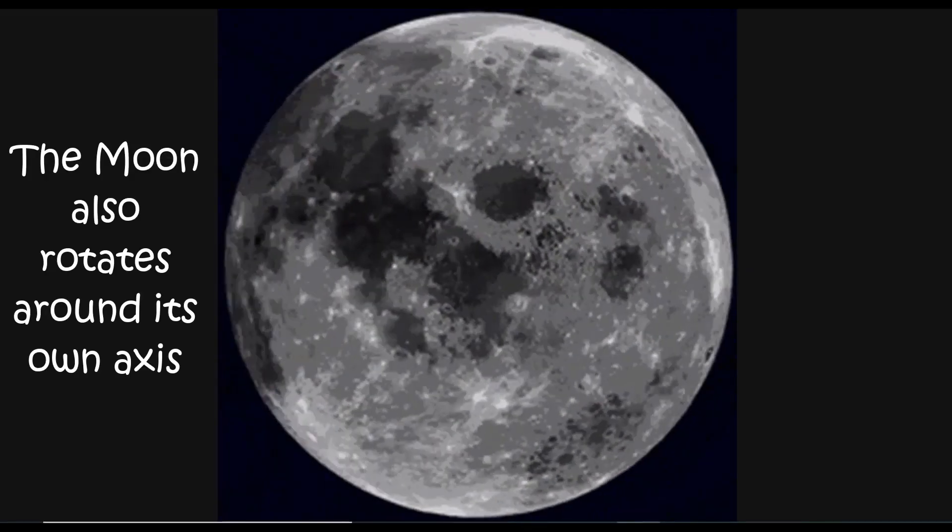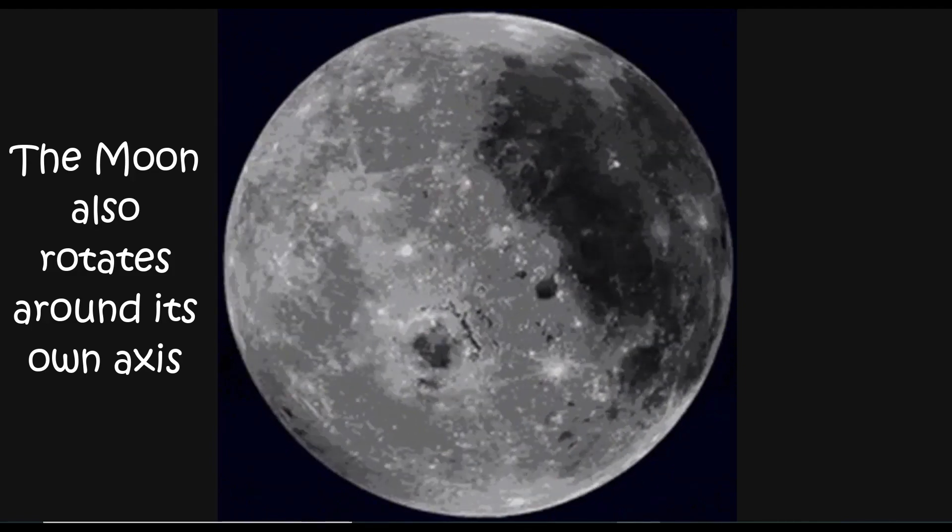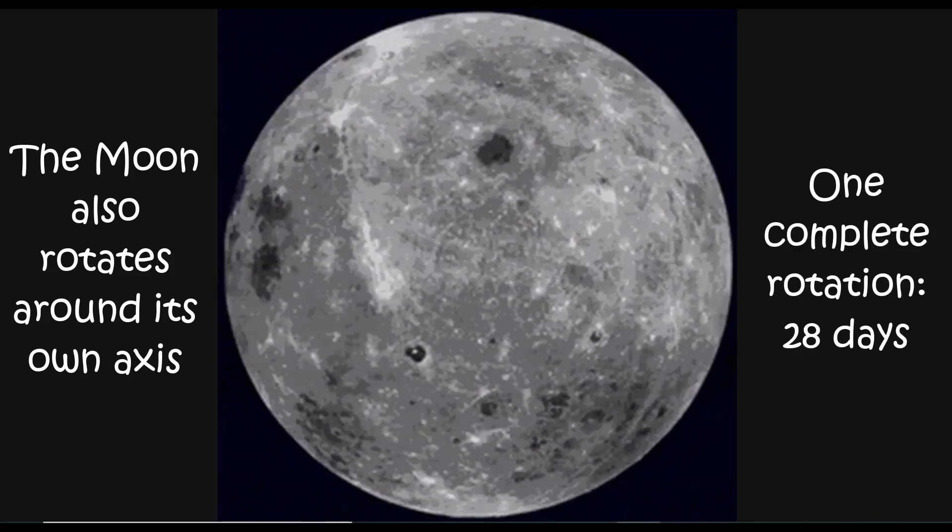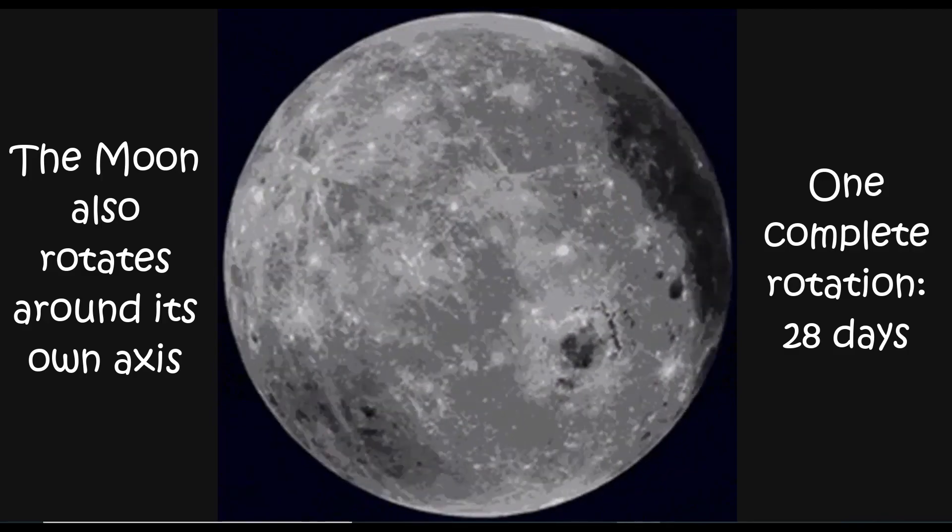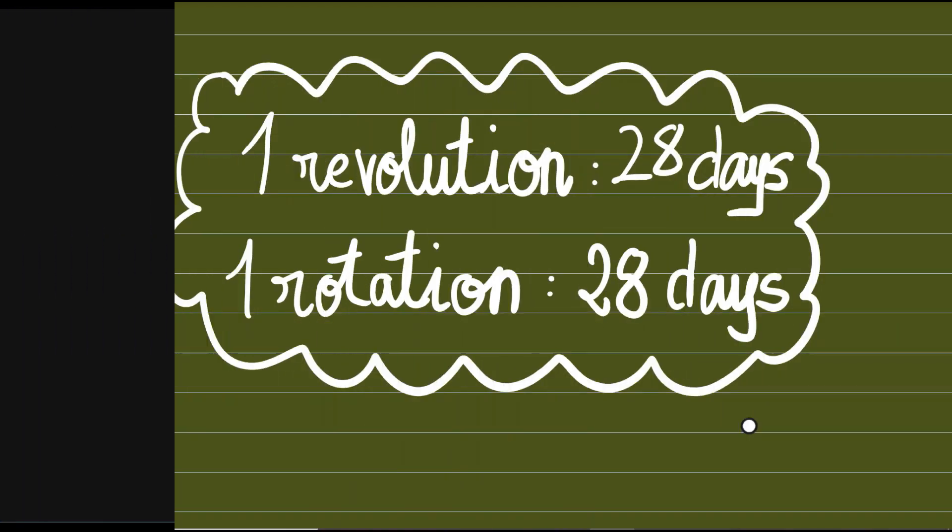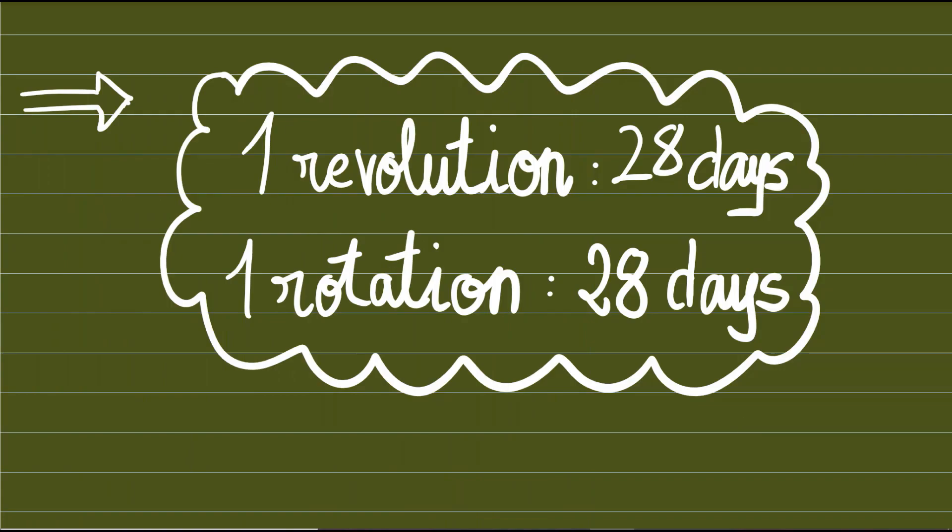The moon also rotates around its own axis. One complete rotation of the moon takes 28 days. So, one revolution takes 28 days, and one rotation also takes 28 days.